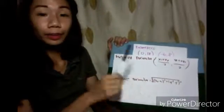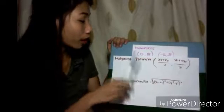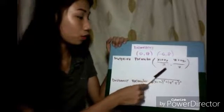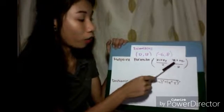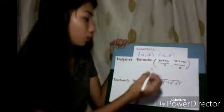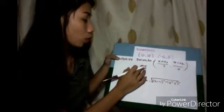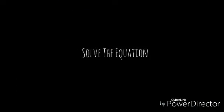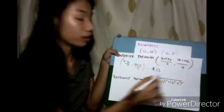To find the midpoint, we will use the formula x of 1 plus x of 2 over 2 comma y of 1 plus y of 2 over 2. Let's just replace. Our midpoint is negative 3 comma 13.